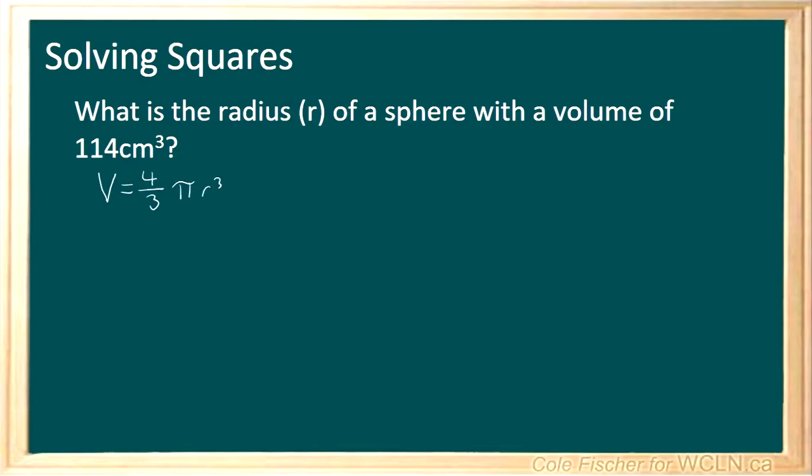Since we are trying to solve for r we need to isolate r cubed. So we will start by multiplying both sides by 3 over 4.